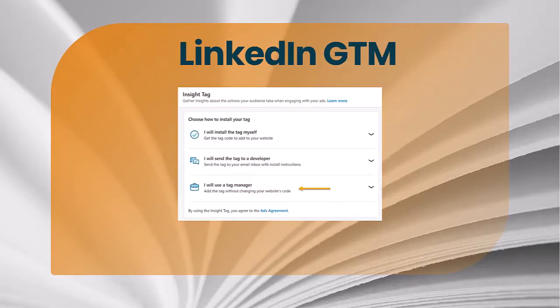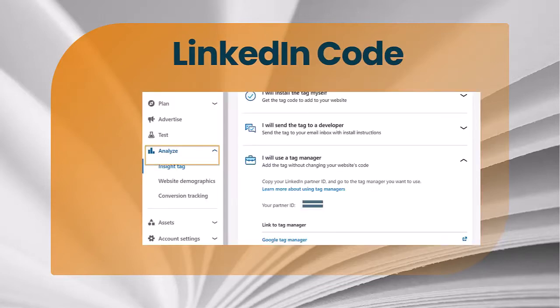Let's show you how to add the LinkedIn tag to Google Tag Manager and start tracking in Google Analytics 4. First, go into LinkedIn and if you already have an advertiser account, you'll see the Analyze tab — this is where you'll find the Insight Tag. Depending on your setup, since we're using Google Tag Manager, you'll want to select the third option: 'I will use the Tag Manager to set up the tag for LinkedIn Insights.'